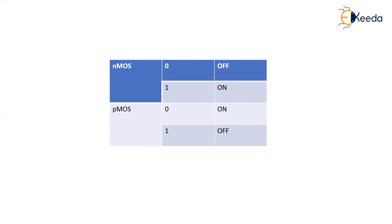What we saw in the last class: how the MOSFET is going to turn on and off. If I give 0, my N MOSFET will be off. If I give 1, my N MOSFET is going to turn on. For a P MOSFET, if I give 0, my device will turn on, and if I give 1, my device is going to turn off. This is most important — that's why I am repeating it again and again.